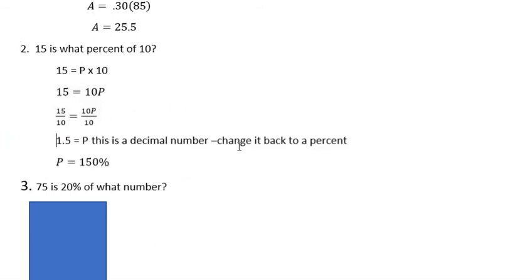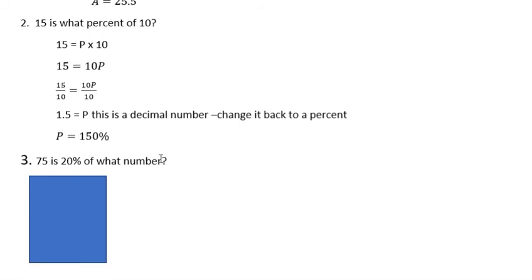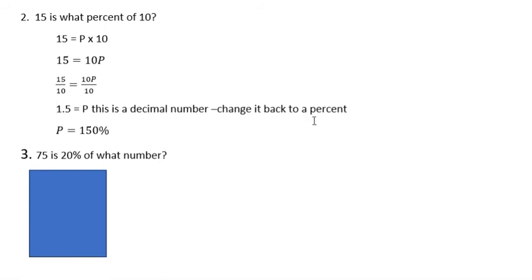Now 15 over 10 gives you 1.5 and that's a decimal number. So we want to change it back to a percent by moving the decimal point two places to the right and adding the percent symbol. So 1.5 becomes 150 percent.